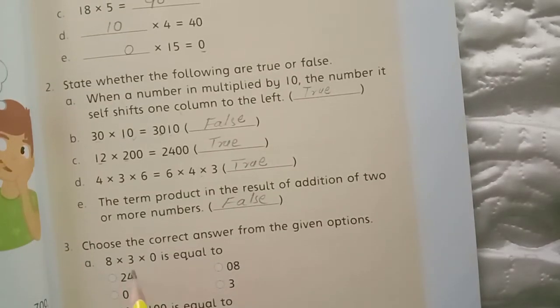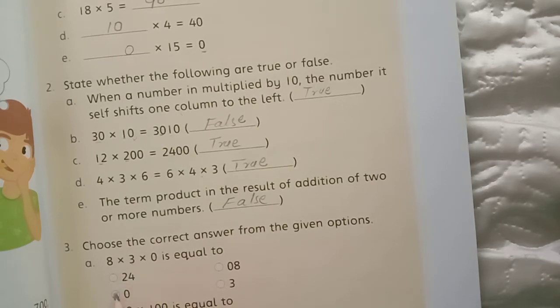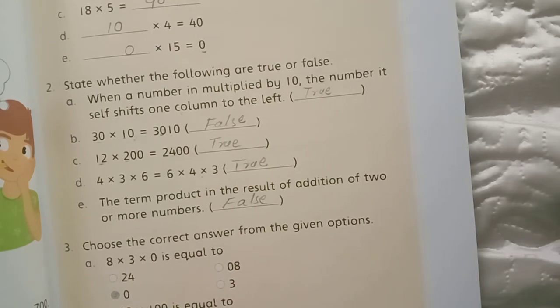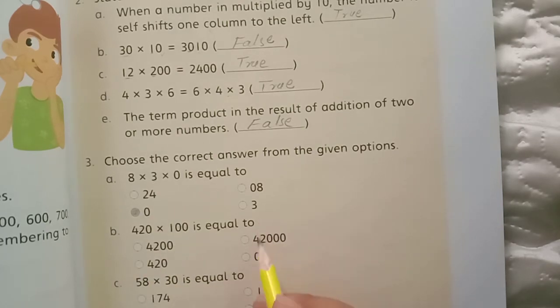Question 3: choose the correct answer from the given options. We know the correct answer. 8 multiplied by 3 multiplied by 0 is equal to 24, and 24 multiplied by 0 is 0. That is our answer. B: 420 multiply 100 is equal to—now I have told you this rule: 42 multiply 42 and add the zeros, 1, 2, 3—42000. This is our answer. We can select it.